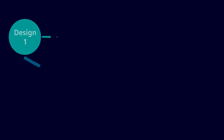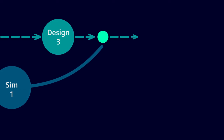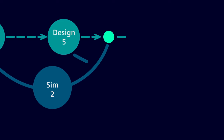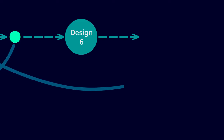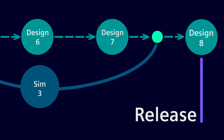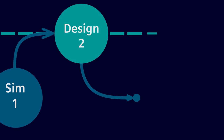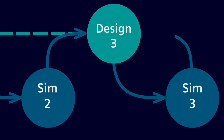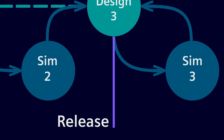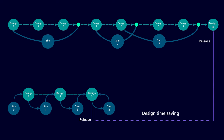Traditionally, simulation only happens at defined, infrequent steps in the product development process. It's carried out by CAE specialists working on different software to their design colleagues. Collaboration between the two worlds is time consuming and often not in sync. Simulation and analysis tools integrated directly into the NX CAD workspace change all of that. Designers can validate their own designs in real time with intuitive systems in the same user interface they already use every day.